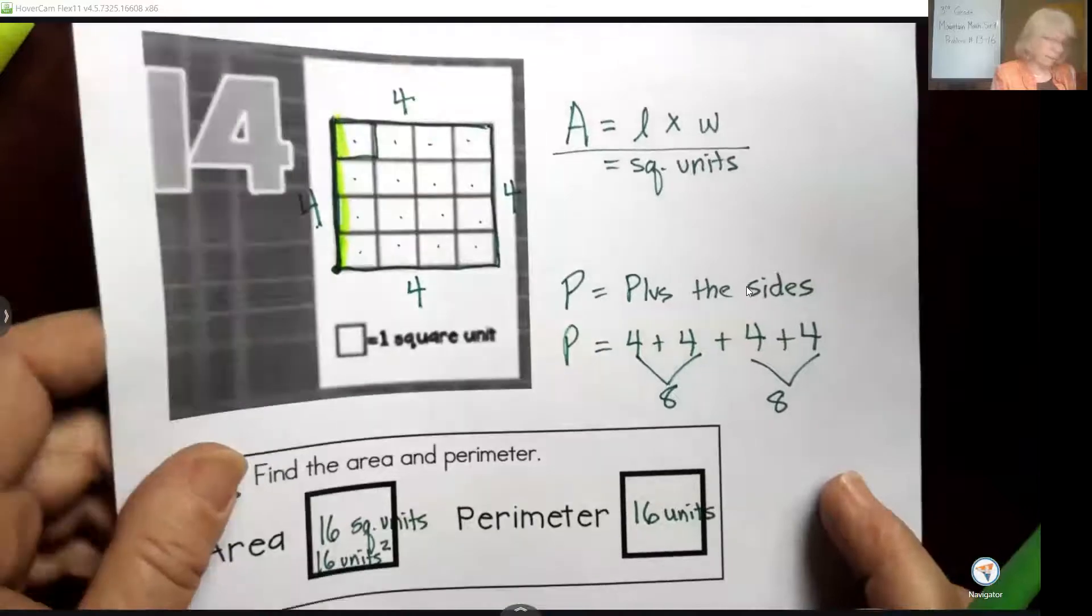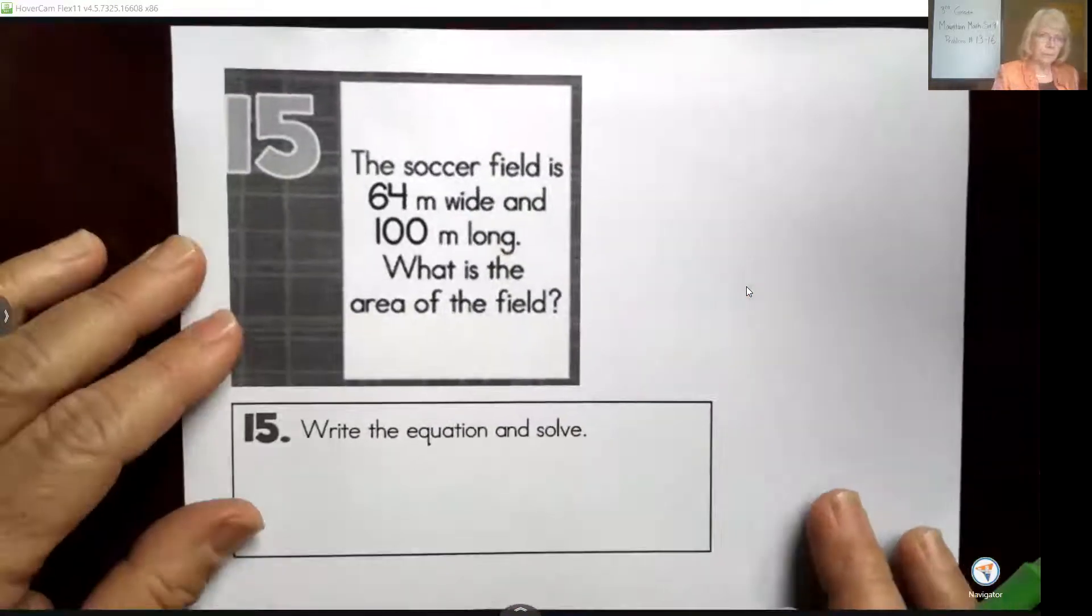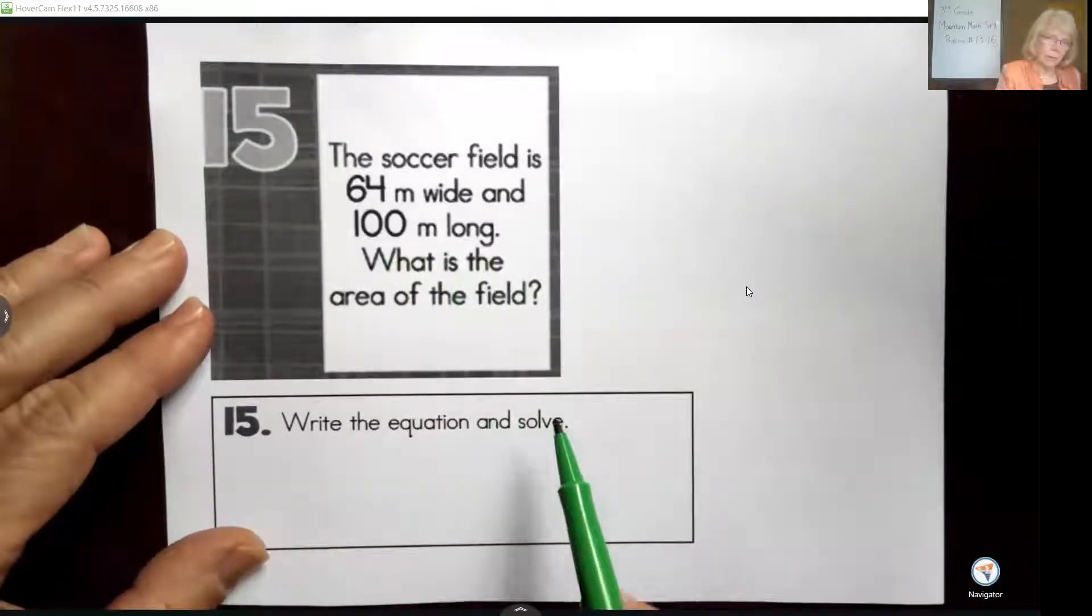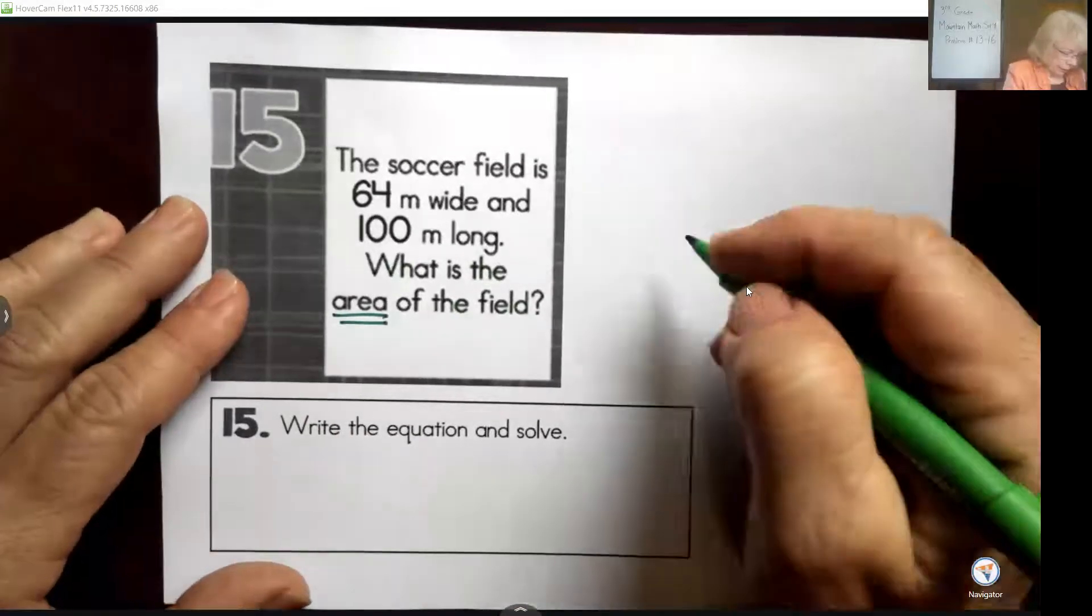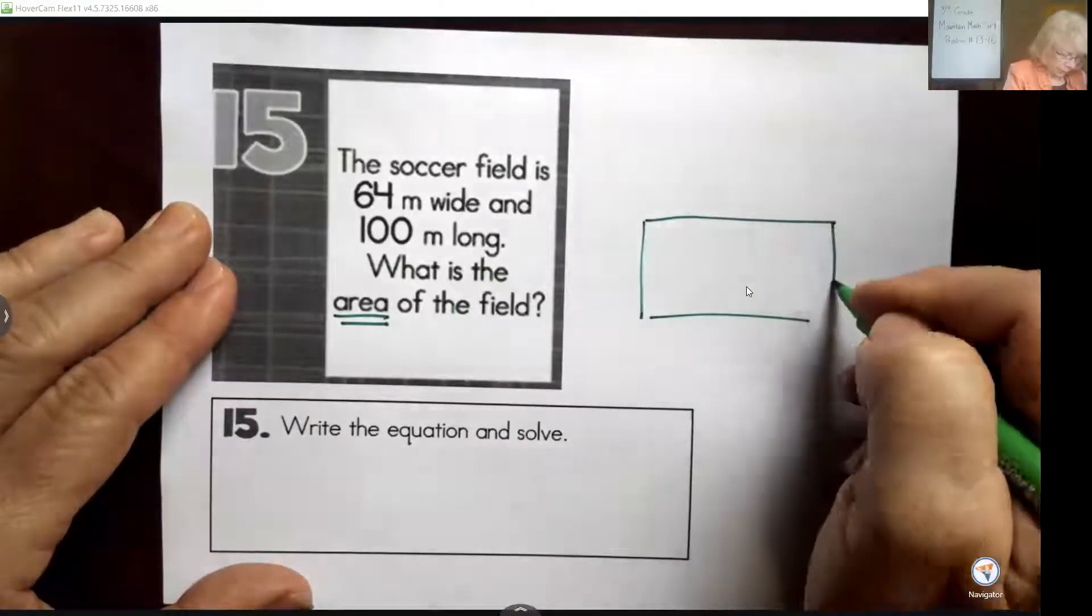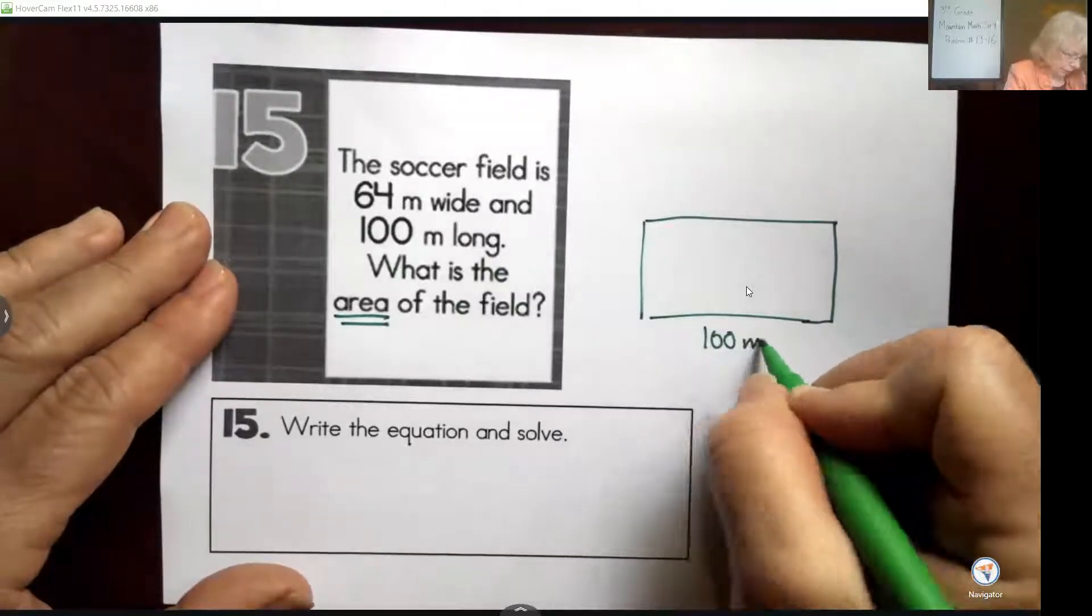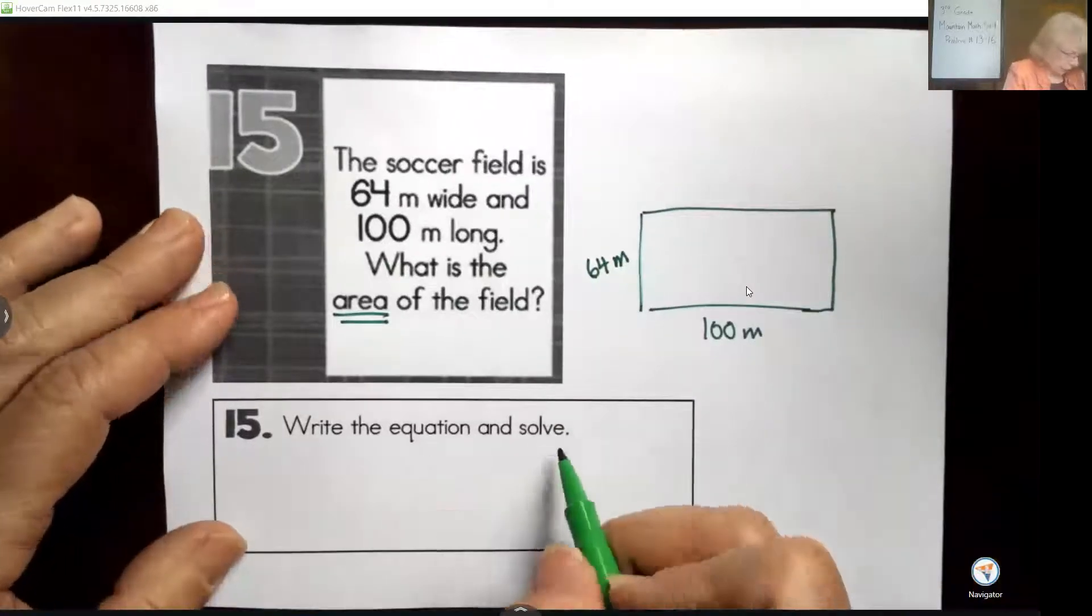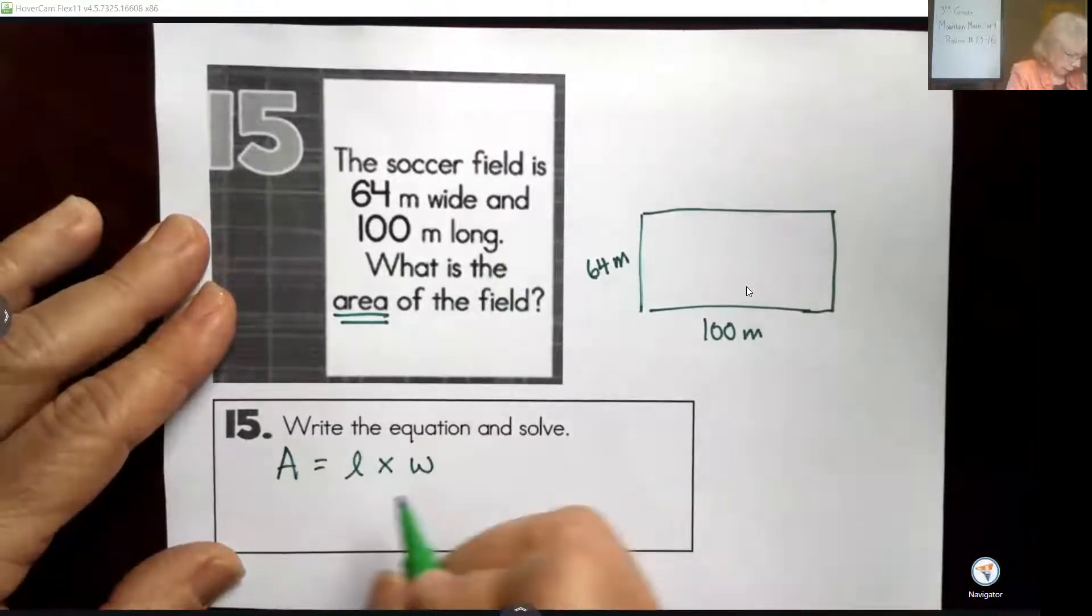Number 15: The soccer field is 64 meters wide and 100 meters long. What is the area of the field? As you might remember, I like my students to do a drawing when they're solving word problems. So this would be 100 meters, and my shorter side is 64 meters. Write the equation and solve. We have area equals length times width, so we have area equals 100 times 64.